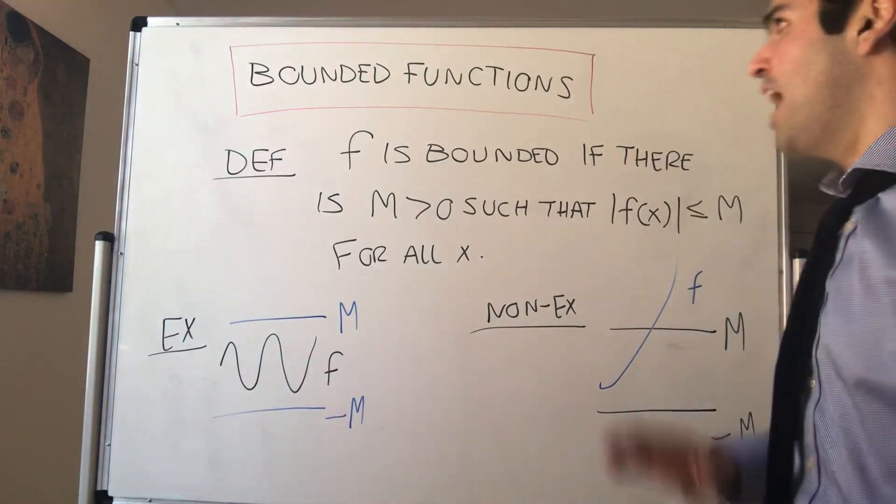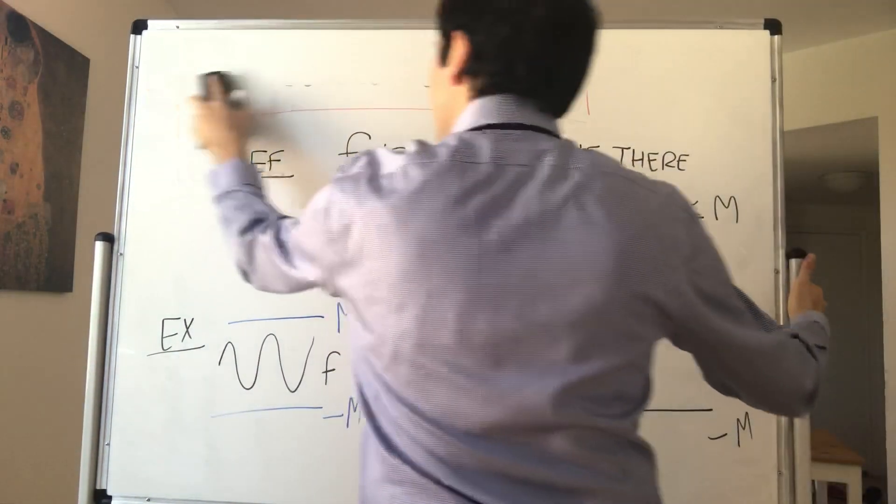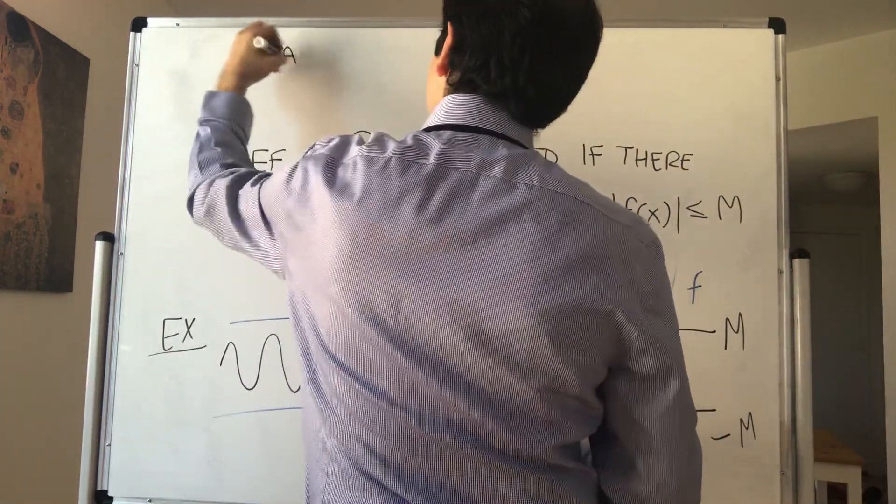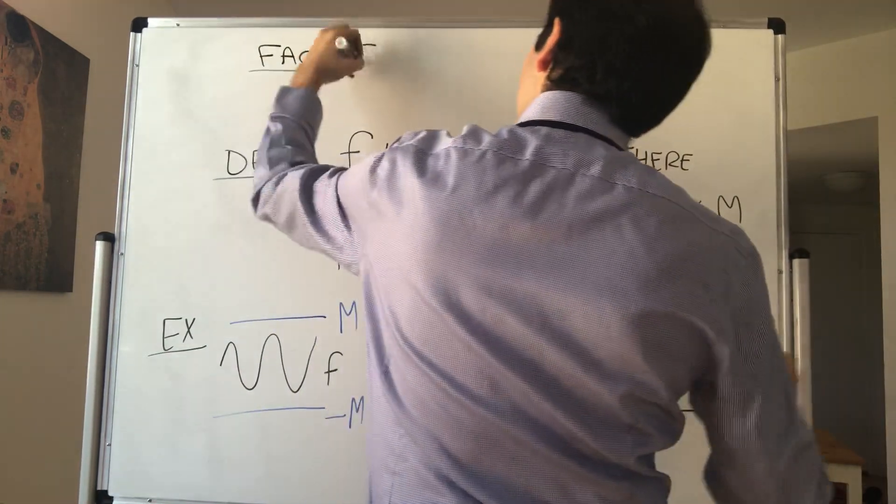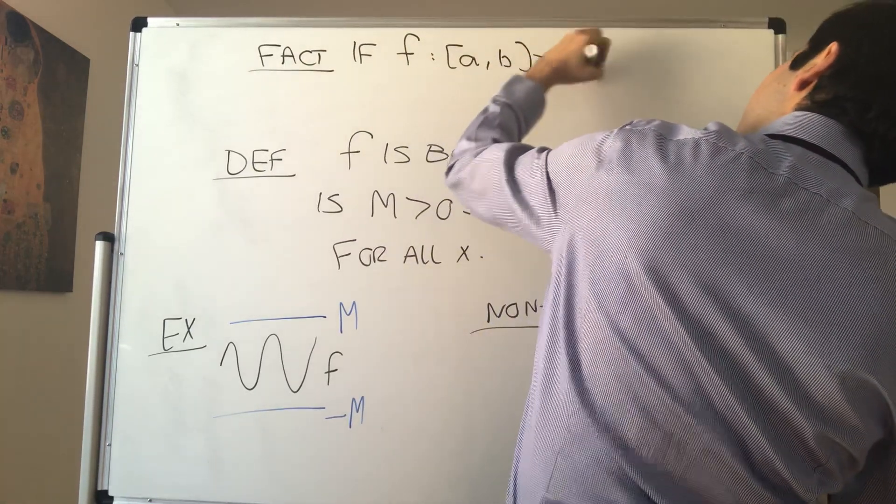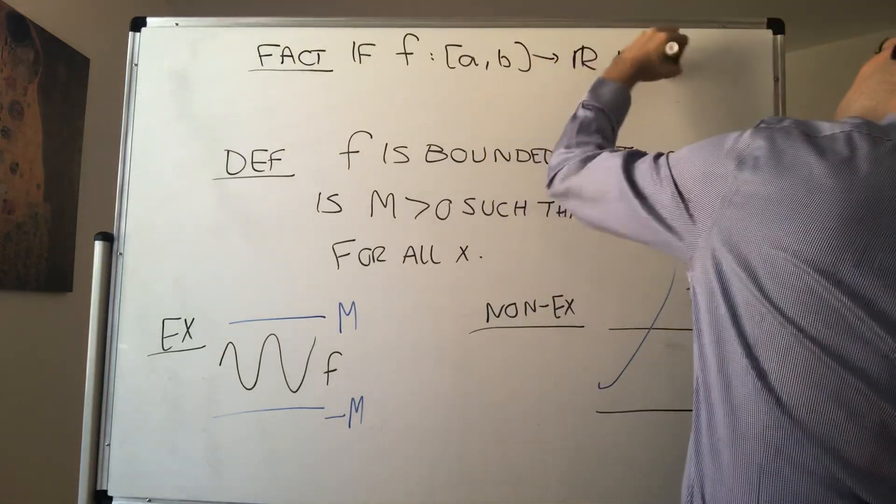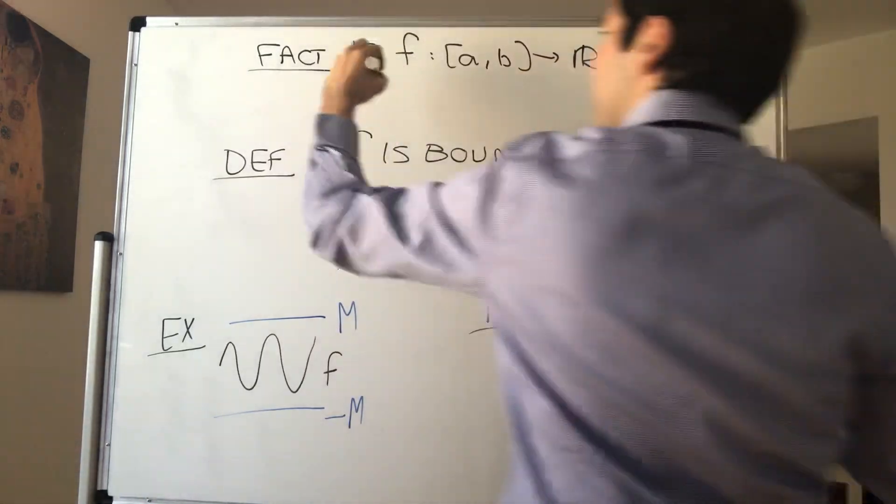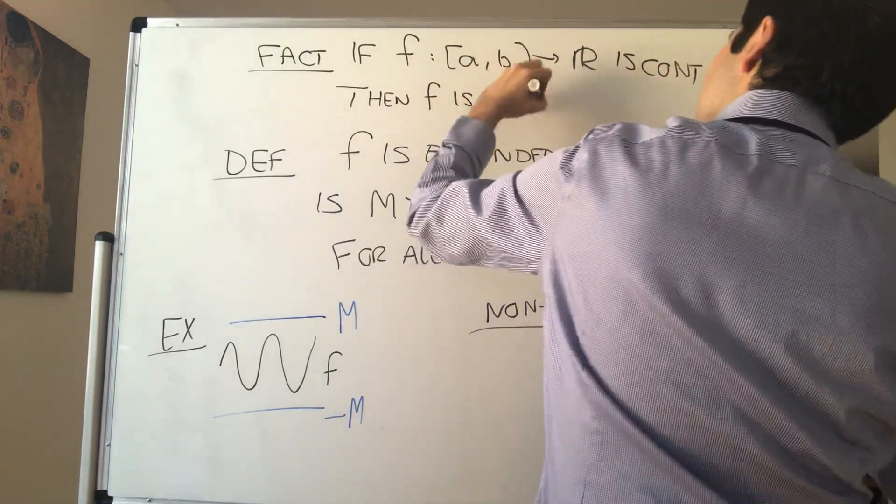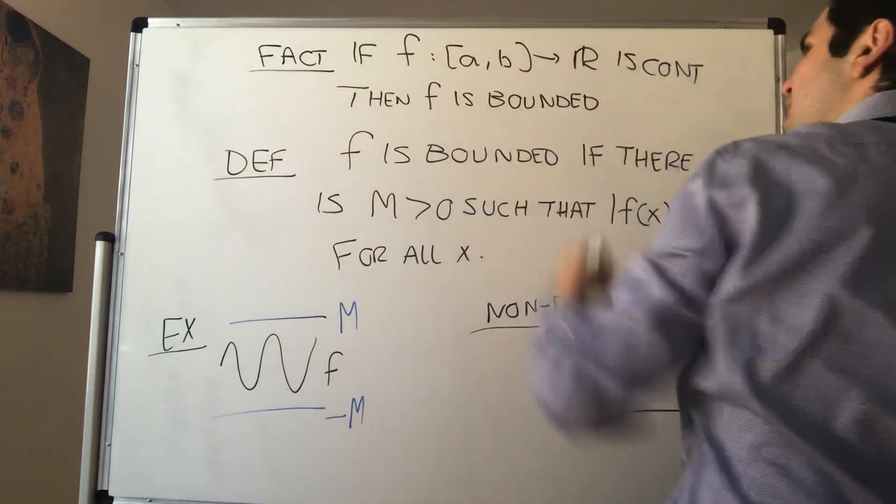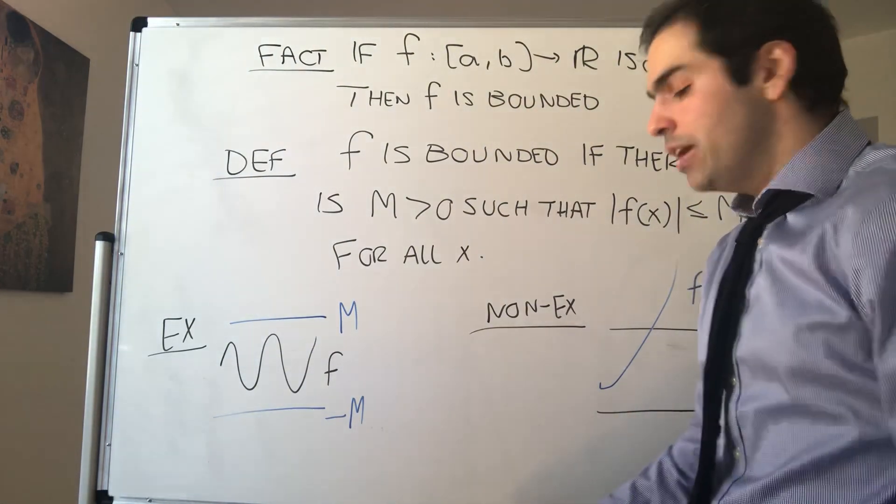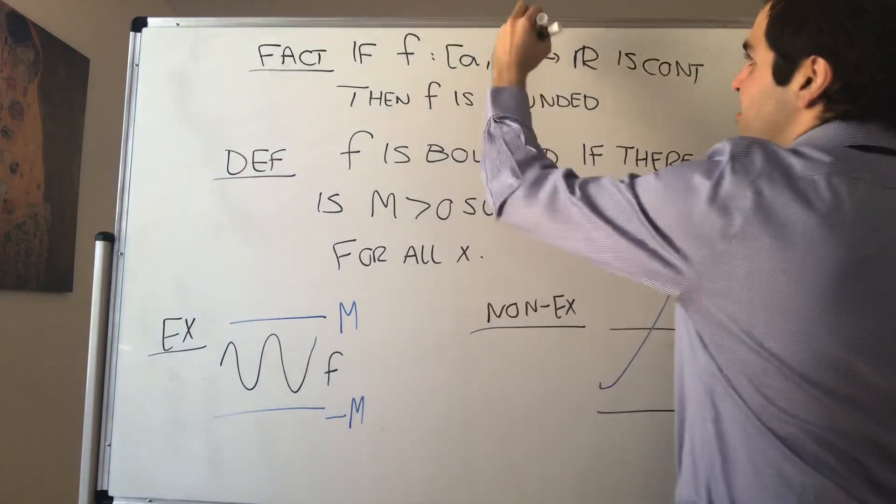And what I want to show today is that if your function is continuous, so if f from [a,b] to R is continuous, then it is bounded. And by the way, it's still true if you replace [a,b] by any compact set. That's also fine.